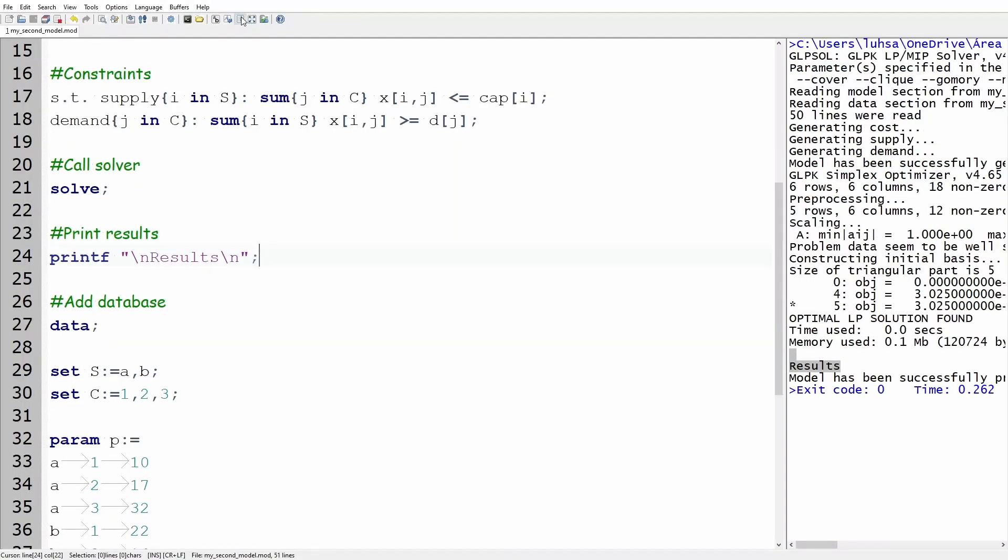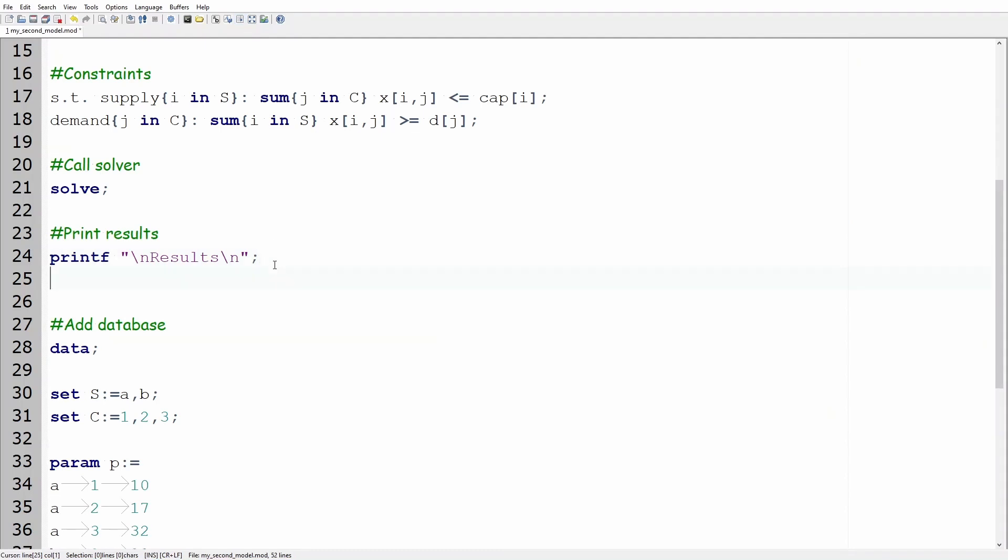Let's set the line between the word result and the values. To do so, type printf, then add a bunch of dashes and finish with backslash n inside quotation marks. Don't forget to add a semicolon in the end of the line.